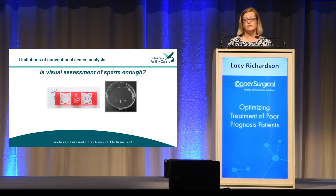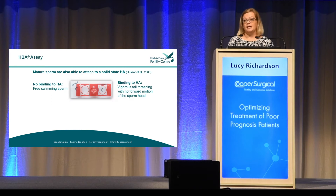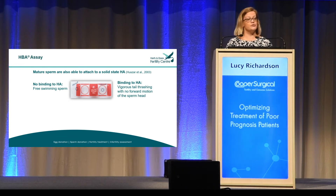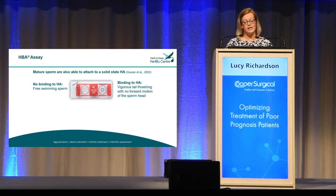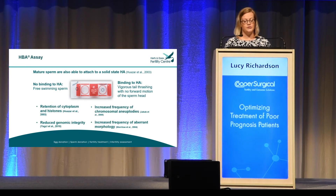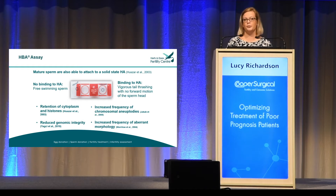I'd like to introduce the two techniques we use in our laboratory to optimise sperm selection: the HBA assay — hyaluronic acid binding assay — and PIXI dishes, which is physiological ICSI. The HBA assay consists of a microscope slide modified to contain solid-state hyaluronic acid. When the sperm sample contacts that hyaluronic acid, we see two distinct behaviours. Immature sperm don't have HA receptors and carry on freely swimming. Mature sperm, however, contact the synthetic hyaluronic acid and exhibit vigorous tail thrashing but with no forward movement — they spin around on their head. By looking at these two different behaviours, we can identify which sperm are mature and which are immature, physiologically selecting sperm in a similar way to the oocyte.